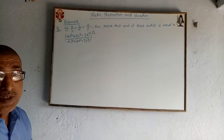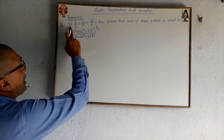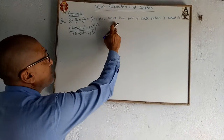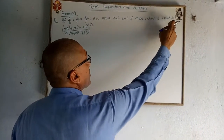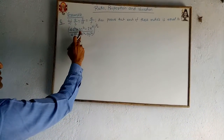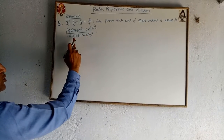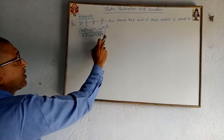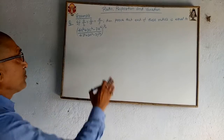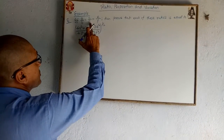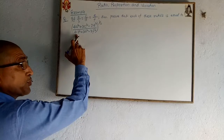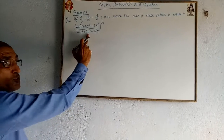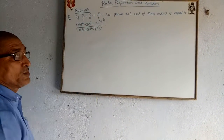This is the next chapter of problem solving. If A by B equal to C by D equal to E by F, then prove that each of these ratios is equal to 4A square plus 3C square minus 7E square by 4B square plus 3D square minus 7F square, to the power 1 by 2.